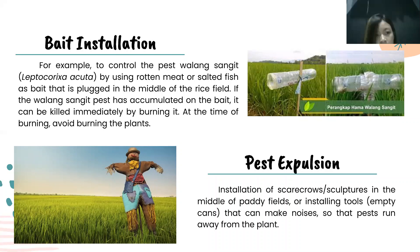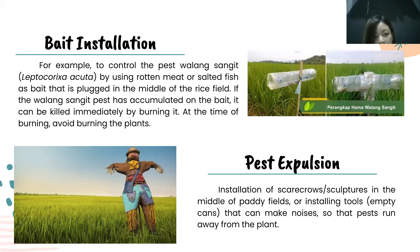For example, to control the walang sangit pest (Leptocorisa acuta), you can use rock and meat or salted fish as bait placed in the middle of the rice field. If the walang sangit pests have accumulated on the bait, they can be killed immediately by burning. At the time of burning, avoid burning the plants.